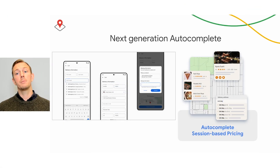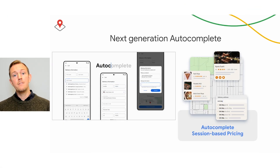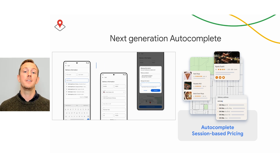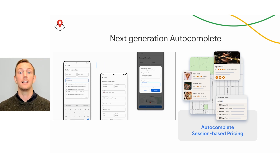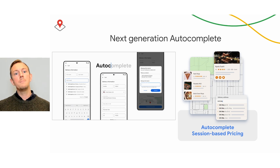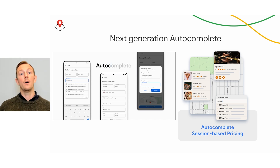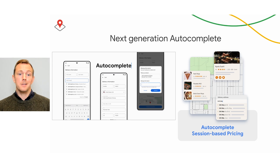With the new Autocomplete session-based pricing, if your user doesn't complete their session — for example, if they enter a single character in the search box and then close their browser — you'll only be charged for an Autocomplete request instead of a full session with address validation or place details. While this new version of Autocomplete is in preview, you can try it out at no cost to you. Over to you, Mike, for some updates on map styling.